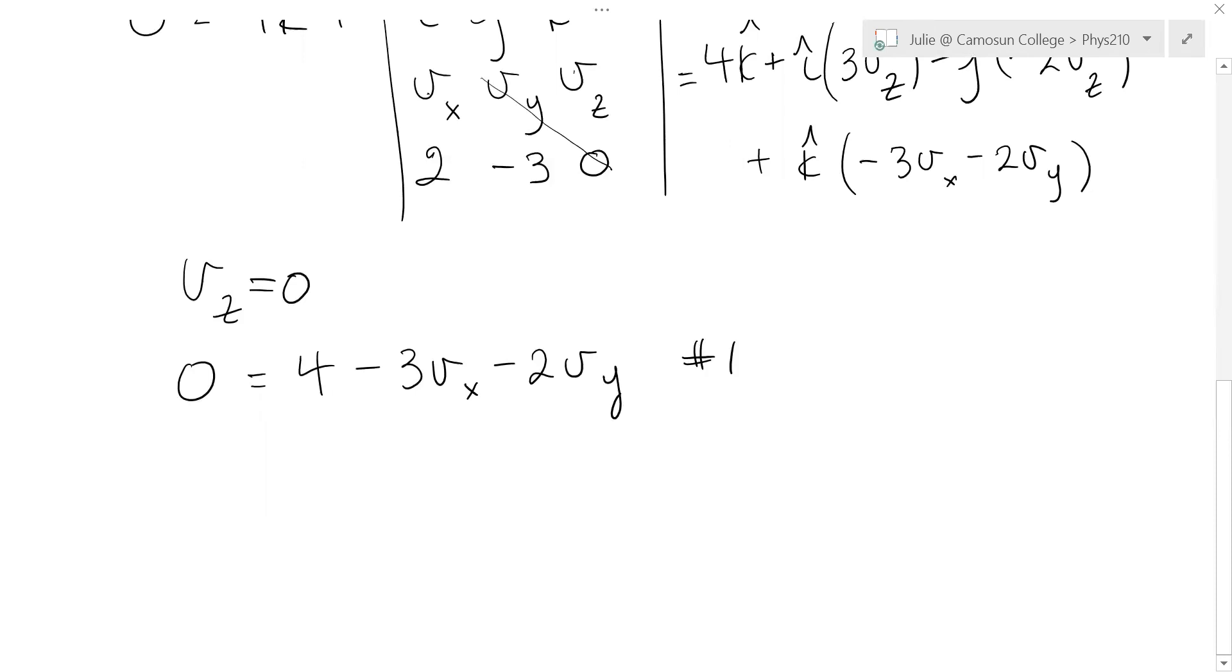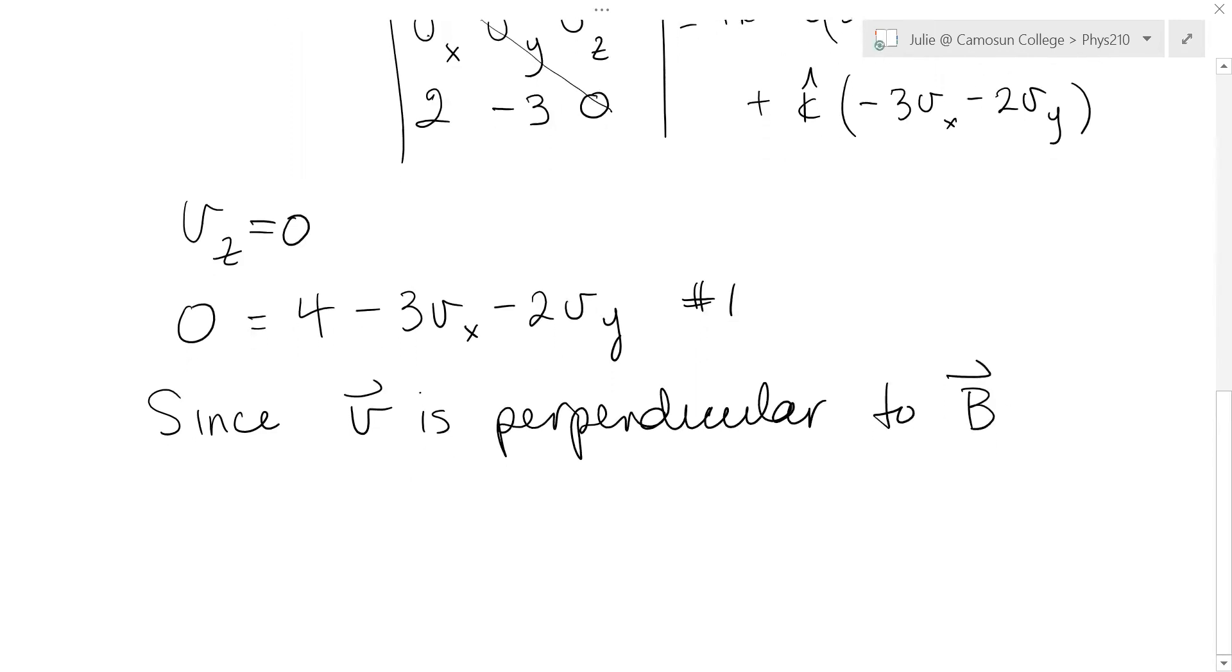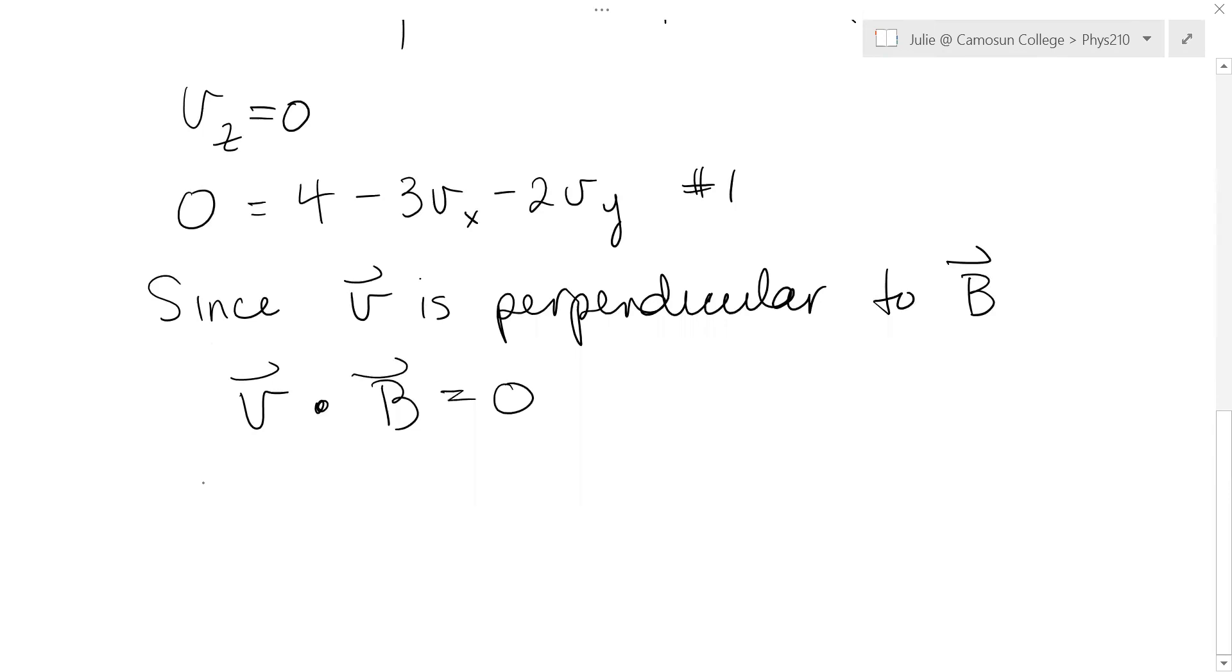It says that the velocity vector is perpendicular to the magnetic field. That means, since V is perpendicular to B, their dot product is zero. V dot B equals zero. So let's actually dot that. It would be Vx Bx plus Vy By plus Vz Bz equals zero.